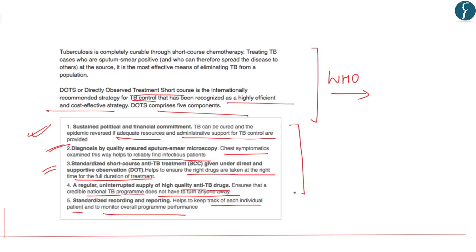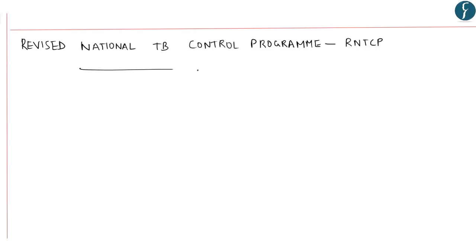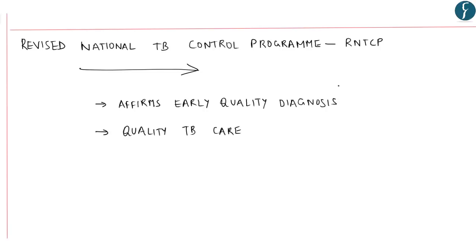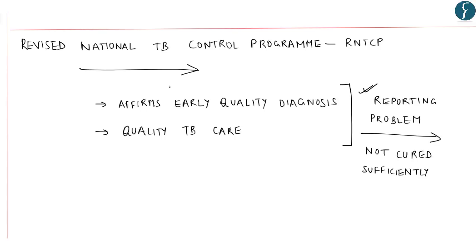These five points of DOTS are very important to understand. Let us now understand about the Government of India's program to reduce TB — the Revised National Tuberculosis Control Program, or RNTCP. This program has initiated firm steps toward its declared objective of universal access to early, quality diagnosis and quality TB care for all TB patients. The problem with TB is that most cases are not reported properly, and once reported, are not cured sufficiently. This program aims for early quality diagnosis as well as proper implementation of cure facilities.